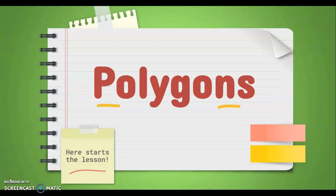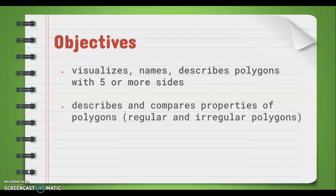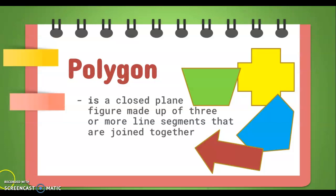Hello children, today we're going to discuss polygons. First, we have the following objectives: number one, visualize, name, and describe polygons with five or more sides; number two, describe and compare properties of polygons, specifically regular and irregular polygons; number three, visualize congruent polygons.